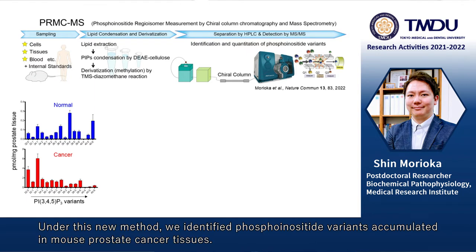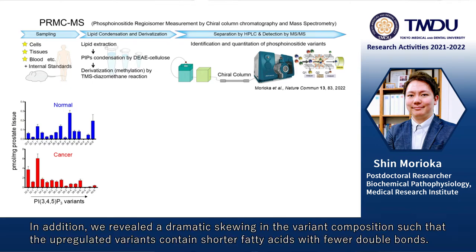So, under this new method, we identified phosphoinositide variants accumulated in mouse prostate cancer tissues. In addition, we revealed a dramatic skewing in the variant composition, such that the upregulated variants contain shorter fatty acids with fewer double bonds.